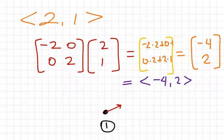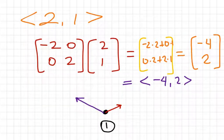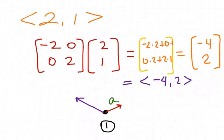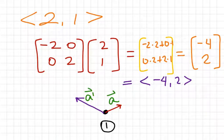Now, using the same starting point from number 1 on your graph, you're going to graph the vector (-4, 2). Starting at that point, negative 4 is to the left and up 2 — there's your transformed vector. In notation, if the original was vector A, then this would be vector A prime. That's the transformation that happened.